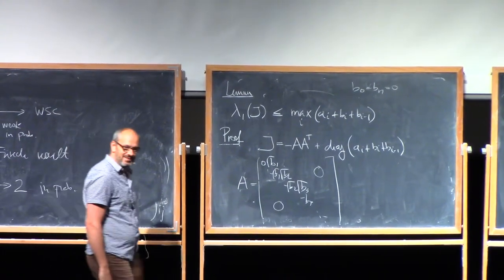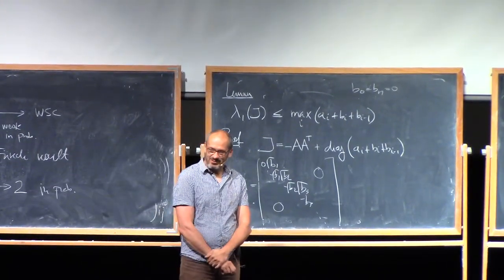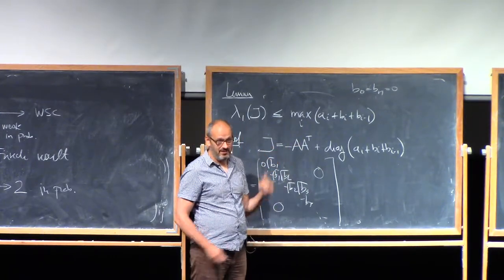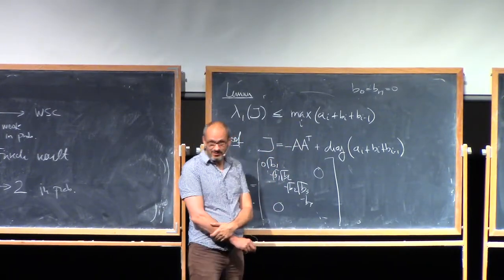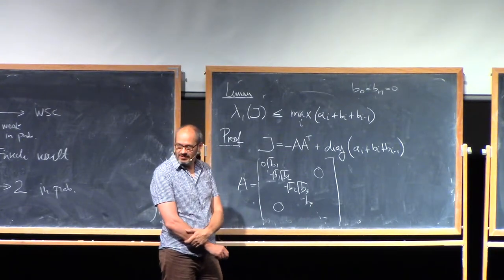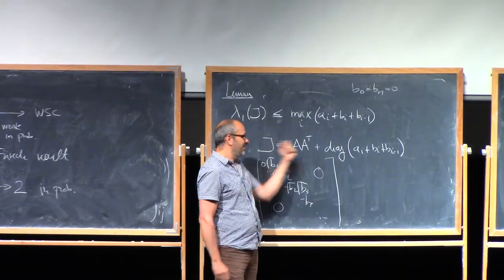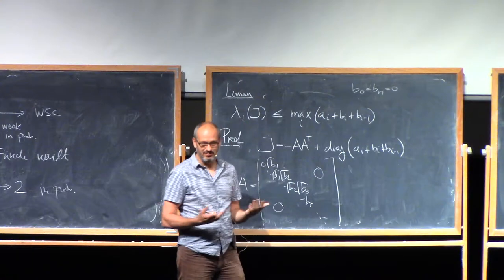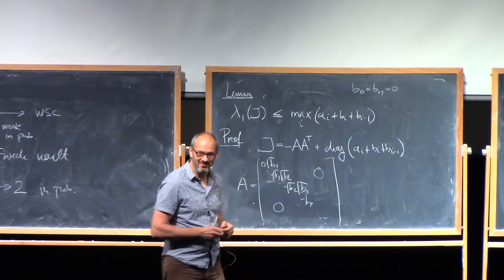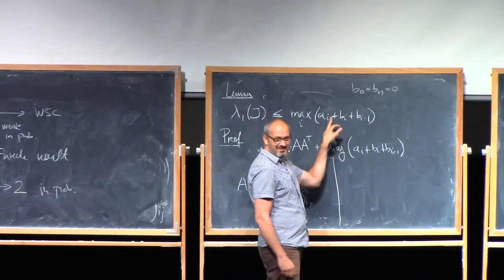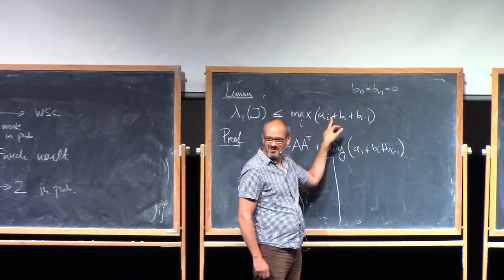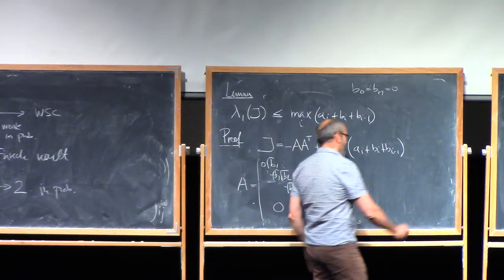I guess that's the end of the proof, basically. Because AA transpose only have non-positive eigenvalues, right? It's a non-negative definite matrix. And the top eigenvalue of the sum of matrices is less than or equal to the sum of the top eigenvalues. So the top eigenvalue of this is that. So that's the end of proof.